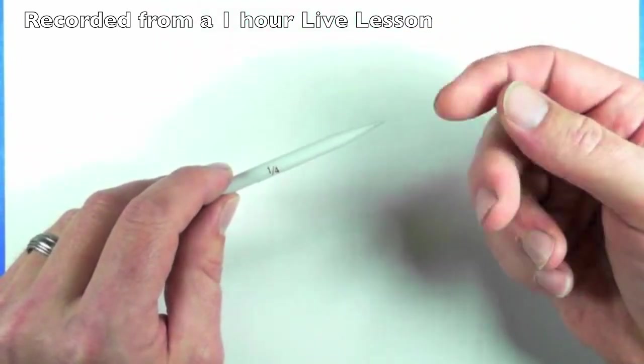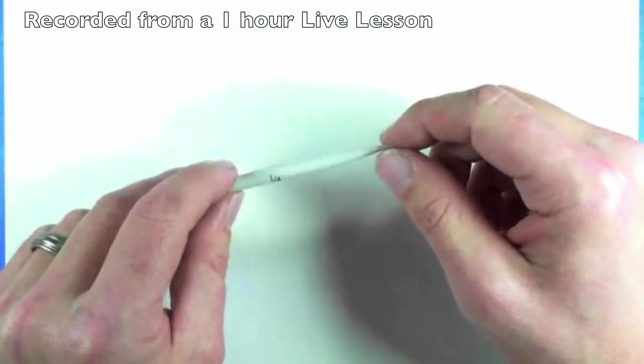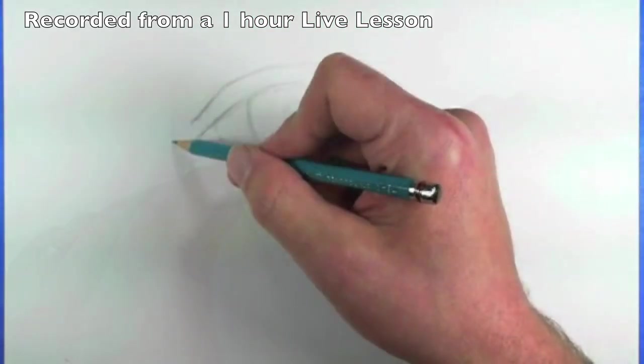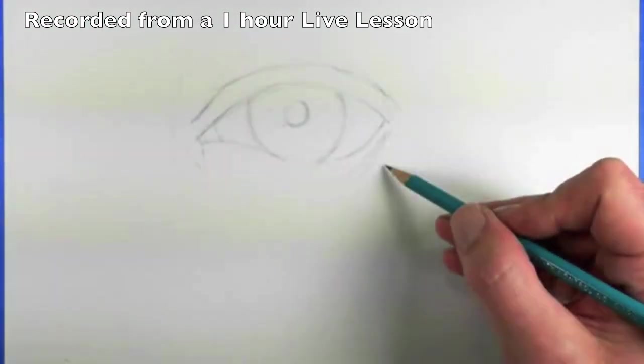You actually have less control with the tip of your finger. Your finger is a lot bigger than the tip of a tortilla or the tip of a blending stump. Make a little bit of a mental note of that.